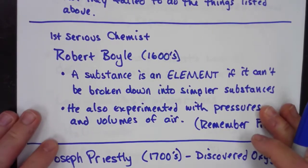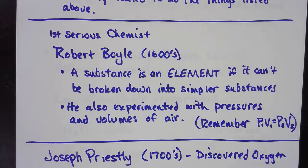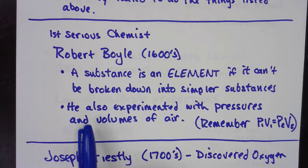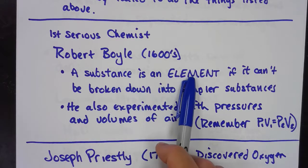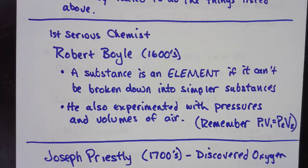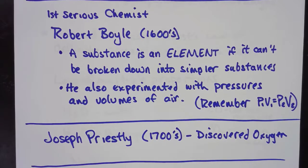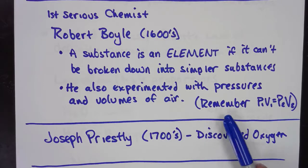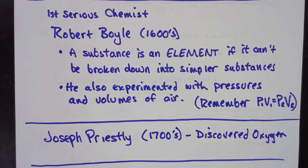The first real serious chemist was Robert Boyle in the 1600s, and he decided, he discovered, or came to the conclusion, that a substance is an element only if it can't be broken down into simpler substances. Which is pretty much carries the day today. We still believe, that's still basically our definition of an element. It's the simplest form of a substance. He also experimented with pressures and volumes of air. You may remember Boyle's Law, P1V1 equals P2V2, from an earlier course that you may have taken.